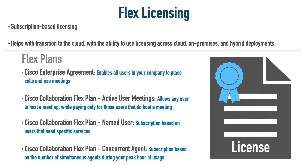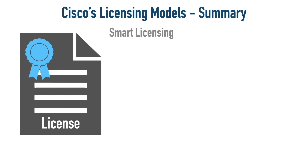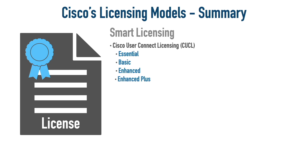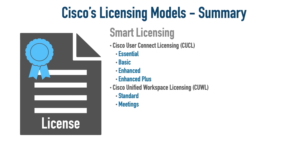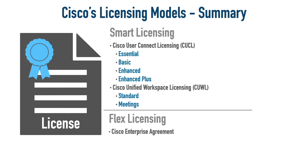Let's summarize. We first talked about smart licensing, great for on-premise deployments, with two types. The first was Cisco User Connect Licensing with four options — Essential, Basic, Enhanced, and Enhanced Plus — providing per-user licensing for individual Cisco Unified Communications applications. Adding Cisco Unity Connection required an add-on. The second smart licensing option was Cisco Unified Workspace Licensing — or CUWL — with two options: Standard and Meetings, where Meetings includes built-in WebEx conferencing support that's an add-on with Standard.